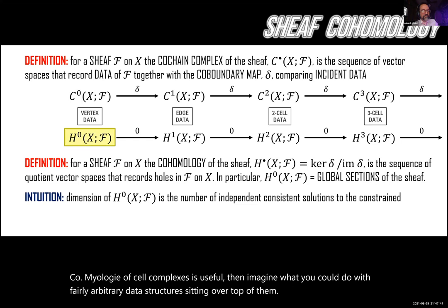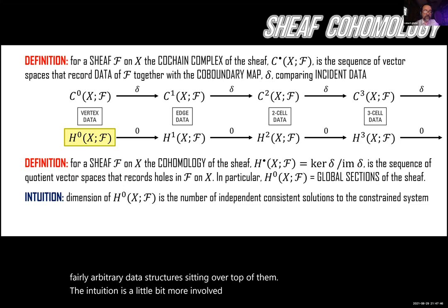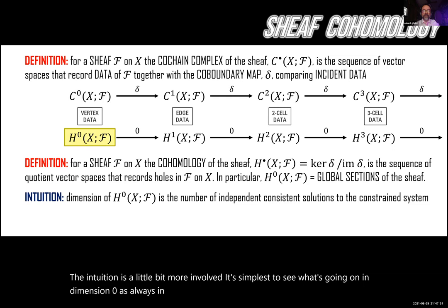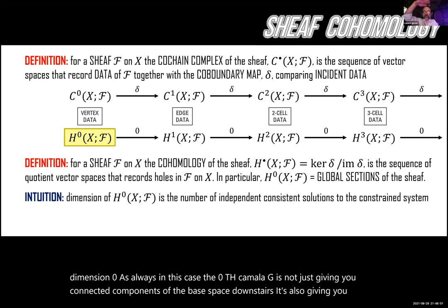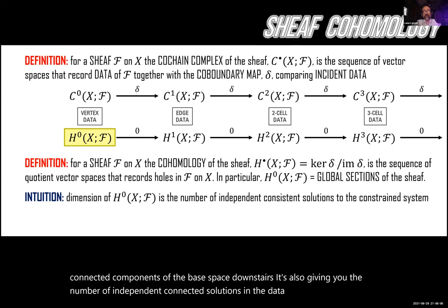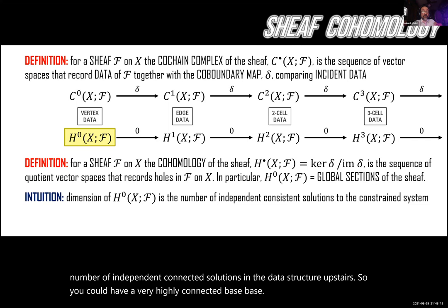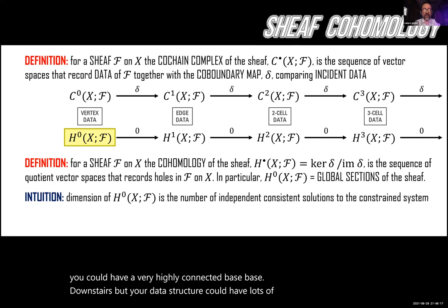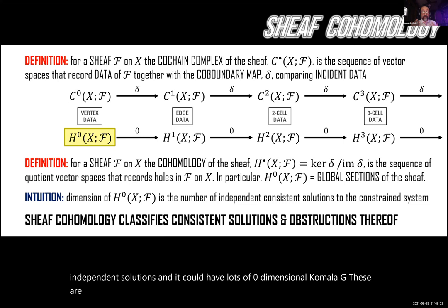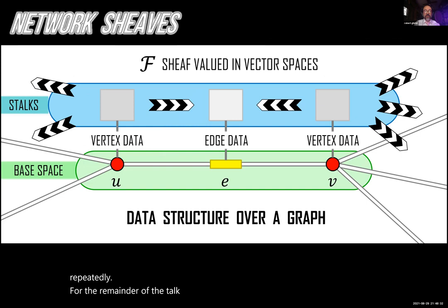The intuition is simplest in dimension zero: the zero cohomology gives you not just connected components of the base space, but also the number of independent connected solutions in the data structure upstairs. You could have a highly connected space downstairs but lots of disconnected independent solutions. These are called global sections of the sheaf, and we will see them used repeatedly throughout the talk.